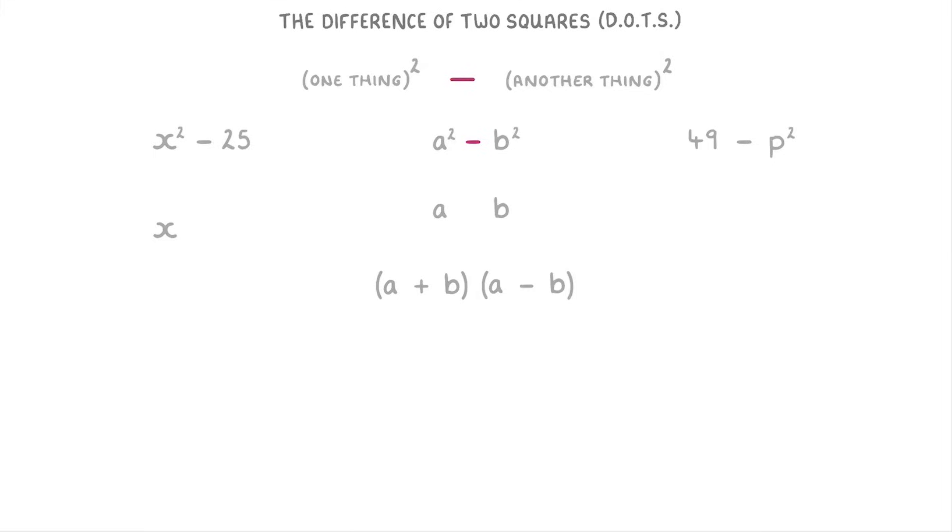Another way to think about it is that we're just finding the square root of x squared which is x. Then if we do the same for 25, the square root of that is 5 so we write that below as well.